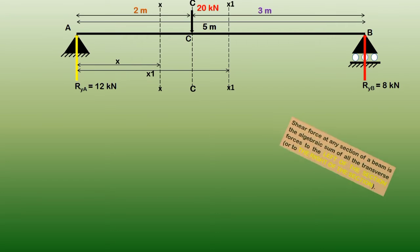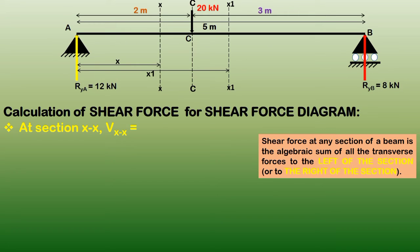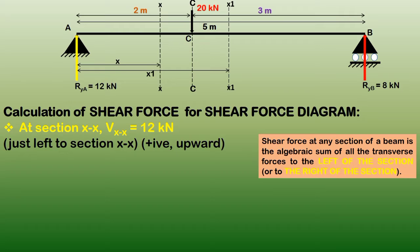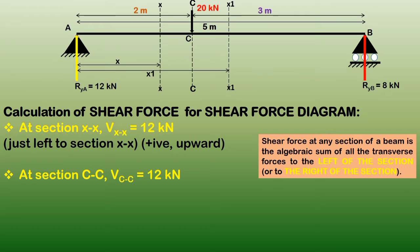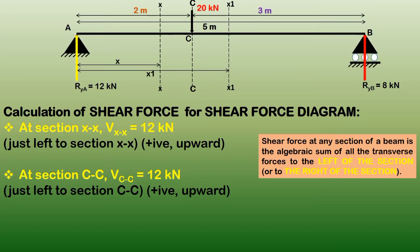For the shear force diagram, we first calculate the shear force at section X-X. The definition states: the shear force at any section of a beam is the algebraic sum of all transverse forces to the left or to the right of that section. At section X-X, looking to the left, only 12 kN acting upward is present.